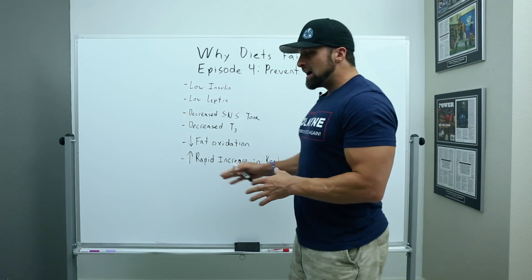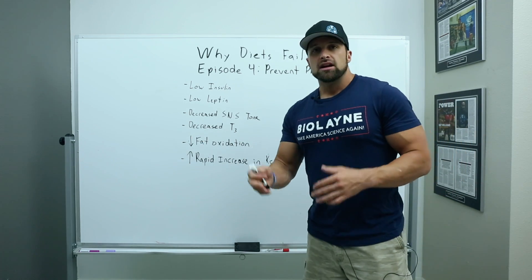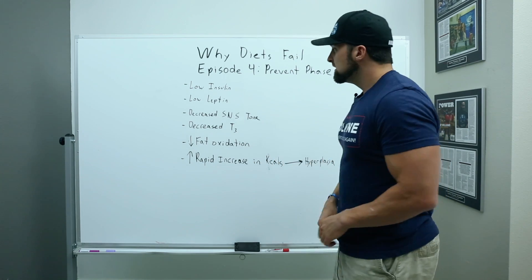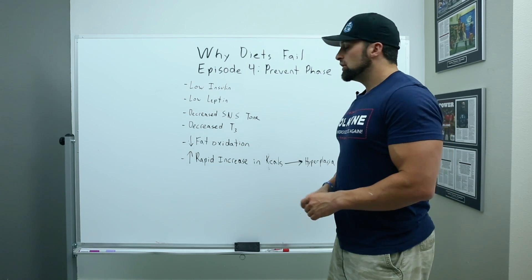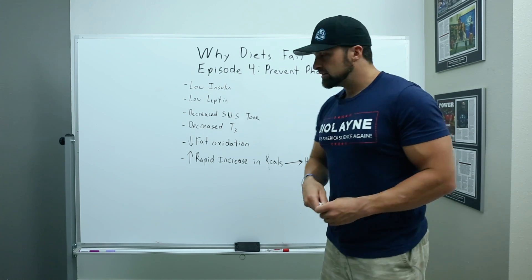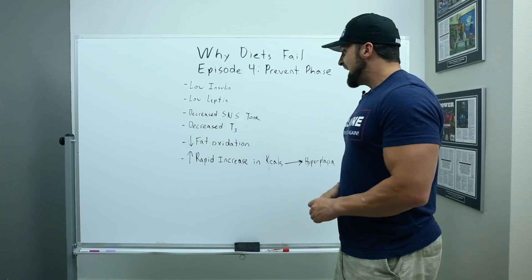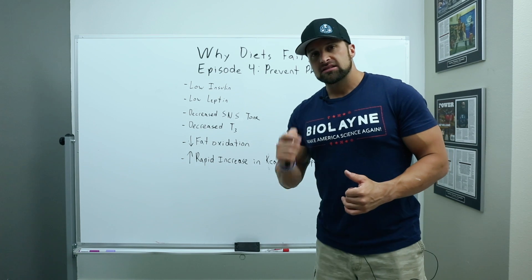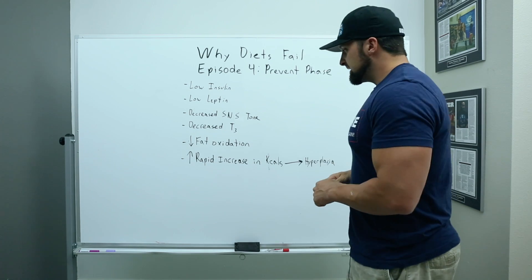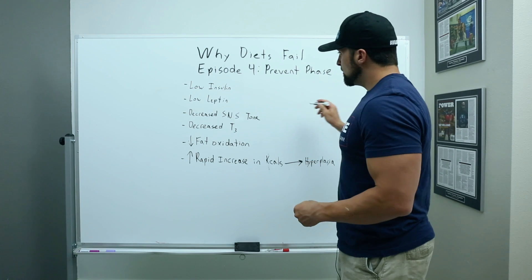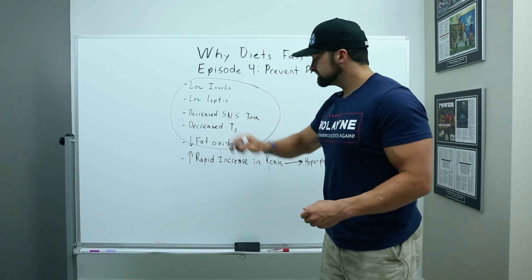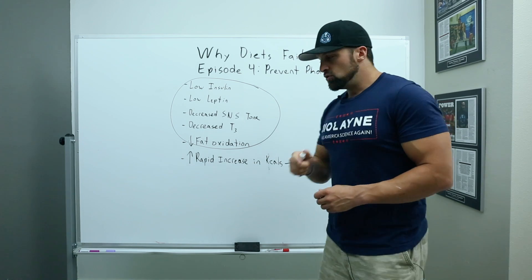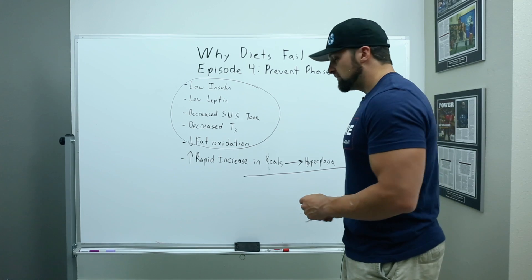Well, one, you have a very unique hormonal milieu after you've been on a diet for a while. So, when you've had an energy gap, you've been decreasing calories, you've been decreasing body fat, insulin is low, leptin is low, you have decreased sympathetic nervous system tone, you also have decreased thyroid hormone, and you have decreased fat oxidation in the adipose tissue. All of these things come together to make something very unique possible. That is, at the end of a diet, when you have all of these unique things happening, if you overfeed calories rapidly enough, there is evidence that you can actually create new fat cells.